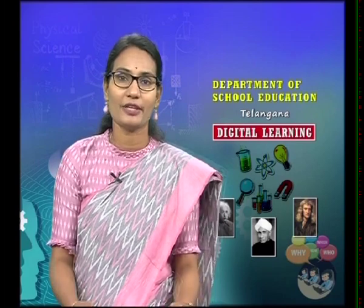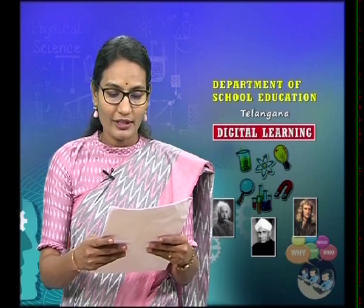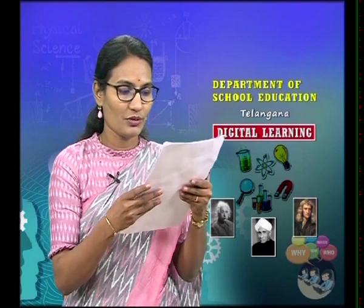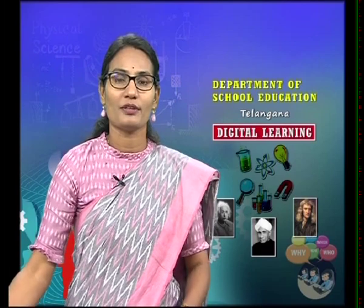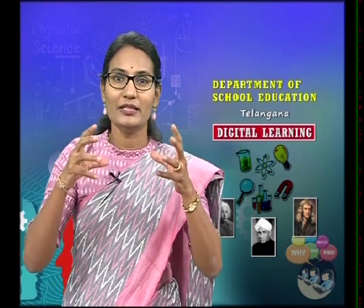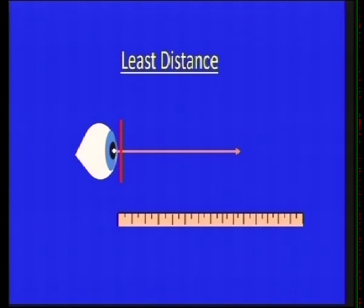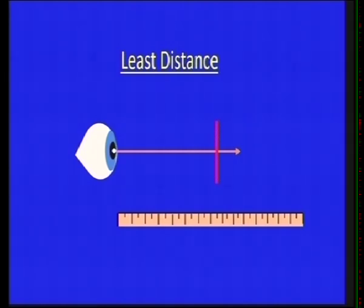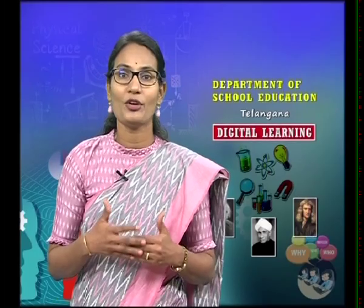Let us start the lesson with a small activity. Take your textbook and read it, then slowly move it closer to your eyes. You might experience that the letters become blurred and your eyes get strained. Now take a rod of 20 centimeters and move it horizontally away from your eye, fixing it at the point where you can see the whole object clearly. For a healthy human eye, the least distance value is about 25 centimeters.